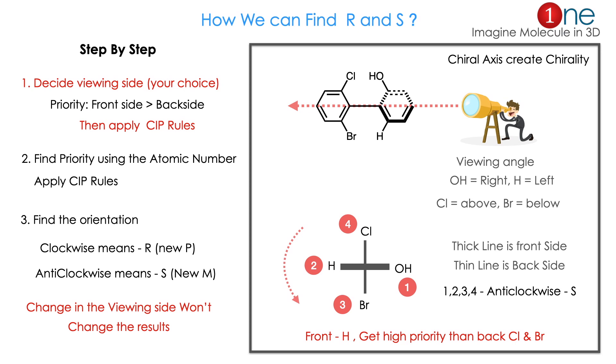Clockwise means it is R, also called P. Anti-clockwise means S, also called M. An important point: changing the viewing angle does not change the results.